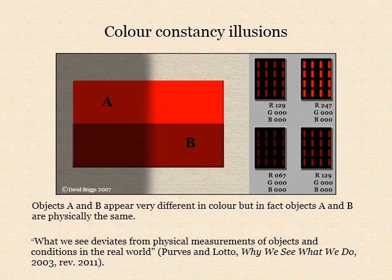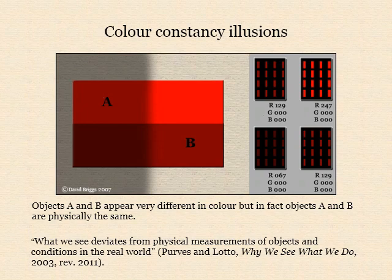Pervs and Lotto apparently even misdirected themselves, because the conclusions they drew from their series of illusions were that what we see deviates from physical measurements of objects and conditions in the real world, and that visual perceptions do not stand for the actual properties of objects in the physical world. On the basis of these assertions they proposed a new theory of visual perception that they regarded as a radical departure from current theories. Their theory remains an extreme minority view among vision scientists, but it continues to influence non-specialists.